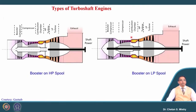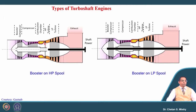Now let us move towards another possible configuration. Here it says booster on HP spool. The initial stage is named as the LP compressor or booster compressor, and the later part is defined as the HP compressor. The HP turbine is used to rotate both compressor stages and our LP turbine is connected with the shaft. We can call this a two spool configuration — one spool dedicated to the gas turbine and the other spool connected to the shaft.